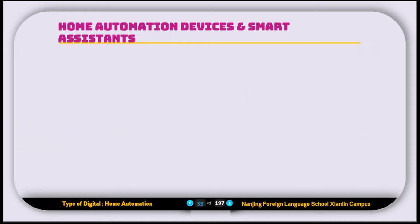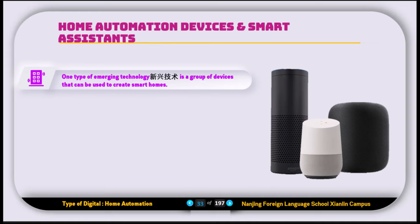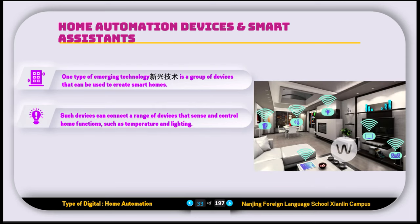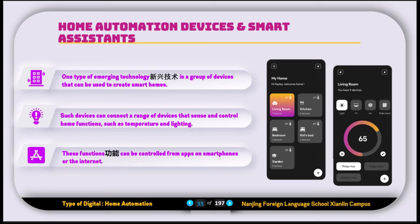Next is home automation and smart assistants. One type of emerging technology is a group of devices that can be used to create smart homes. Such devices can connect a range of devices that sense and control home functions such as temperature and lighting. These functions can be controlled from apps, smartphones, or the internet.